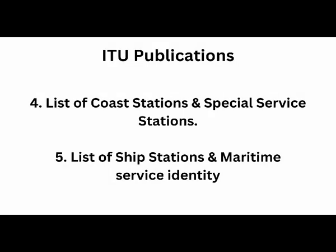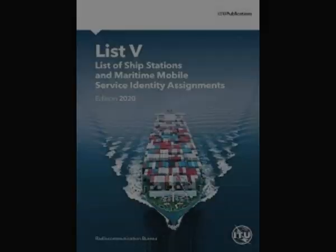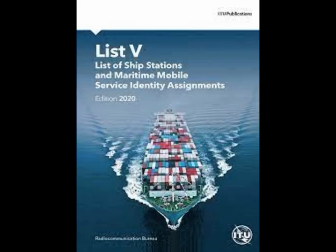Moving on to ITU publications — ITU provides a wide range of study material and booklets for GMDSS. The main concern for us is Manual 4, which consists of the list of coast stations and special service stations, and Manual 5, which talks about the list of ship stations and maritime service identities. Basically, ITU Manuals 4 and 5 are just like an old-fashioned telephone directory — every person owning a telephone would have their name and address listed, and similarly, coast radio stations have a particular MMSI number.